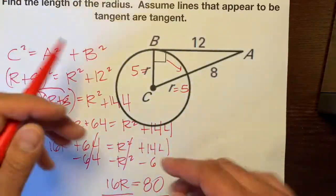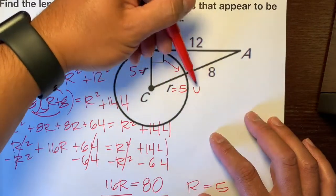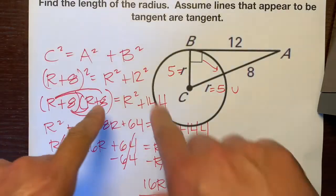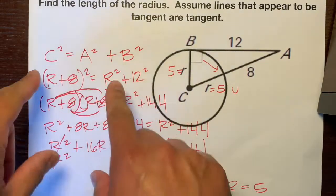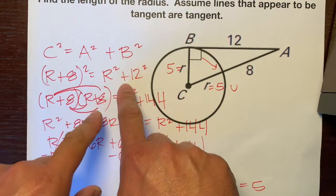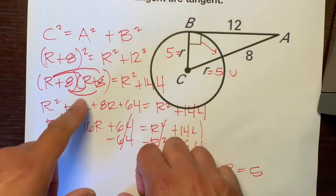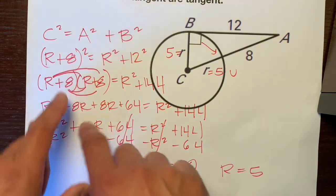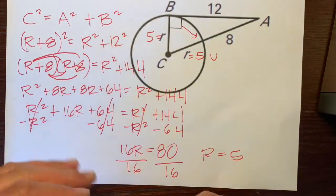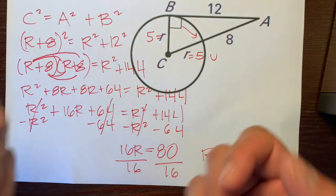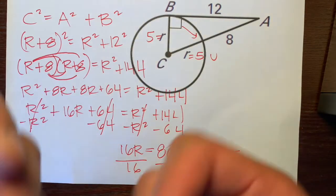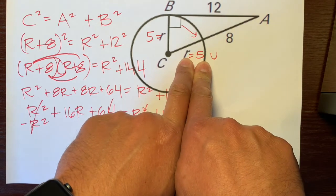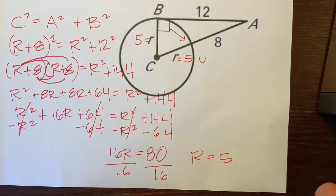So your final answer is r equals 5 units — no inches, no feet, just 5 units. Again, you cannot square root both sides because of the plus sign, and don't distribute the square directly into the terms because of the plus sign. You have to do real algebra to get the correct answer, which is 5. Hope this helps. Have a great day. Bye.